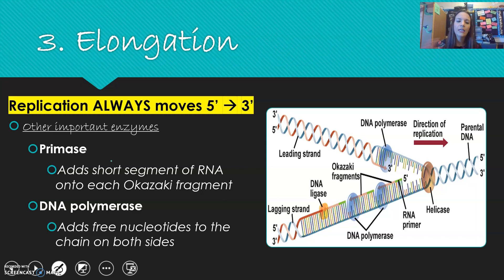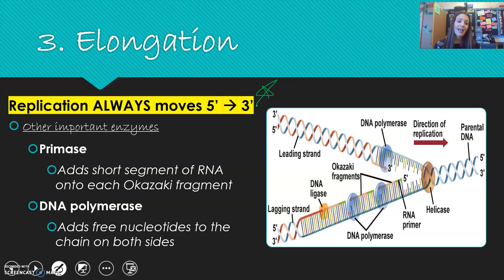In the elongation stage, replication always moves from 5' to 3' — please highlight this in your notes. There are also some important enzymes at play. Primase has to add a short segment of RNA to build those Okazaki fragments. So primase is used on the lagging strand — that's the correct answer.